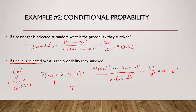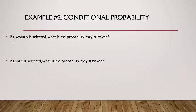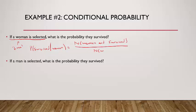If a woman is selected, what's the probability they survived? It's the probability they survived, given that they were a woman — the number of passengers who were a woman and survived, divided by the number of women on the Titanic. That's 316 women survived out of 425 women total, which rounds to 0.74. So 74% of women on the Titanic survived.